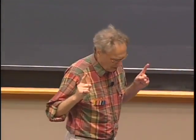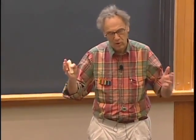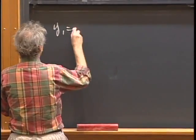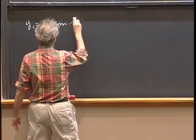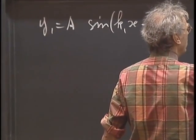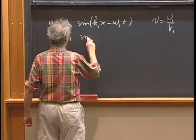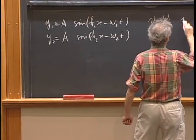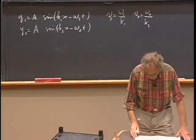I will start with two waves which have different wavelengths and purposely give them different speeds of propagation. I have y₁, which is a traveling wave: the sine of k₁x minus omega₁t, with speed omega₁ divided by k₁. And a second one with the same amplitude: sine of k₂x minus omega₂t, with speed omega₂ divided by k₂. The two speeds are not the same — that is a dispersive medium.